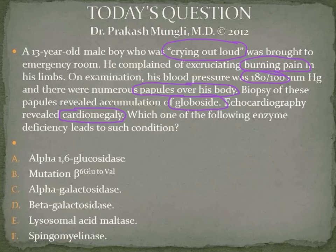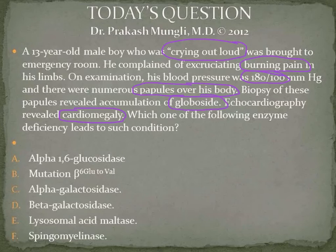There are many features pointing toward a specific condition. The first thing is to look at the accumulated compound, which is globoside. Globoside is a ceramide plus a di-, tri-, or tetrasaccharide attached to ceramide. Since globoside is accumulating, we need to restrict ourselves to sphingolipidoses where globoside accumulation occurs.